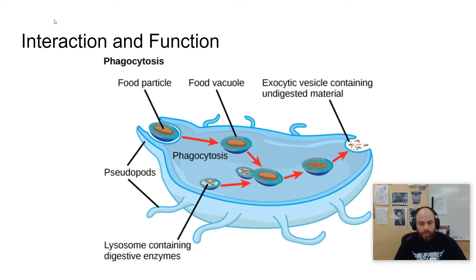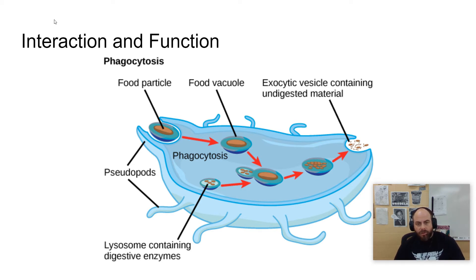Next we'll look at lysosomes and how they digest materials. There's a process called phagocytosis where the cell takes in large food particles — think large portions of macromolecules like carbohydrates, nucleic acids, proteins, and lipids. The lysosomes' purpose is to break those down into their basic parts, which can then move into other parts of the cell for use.